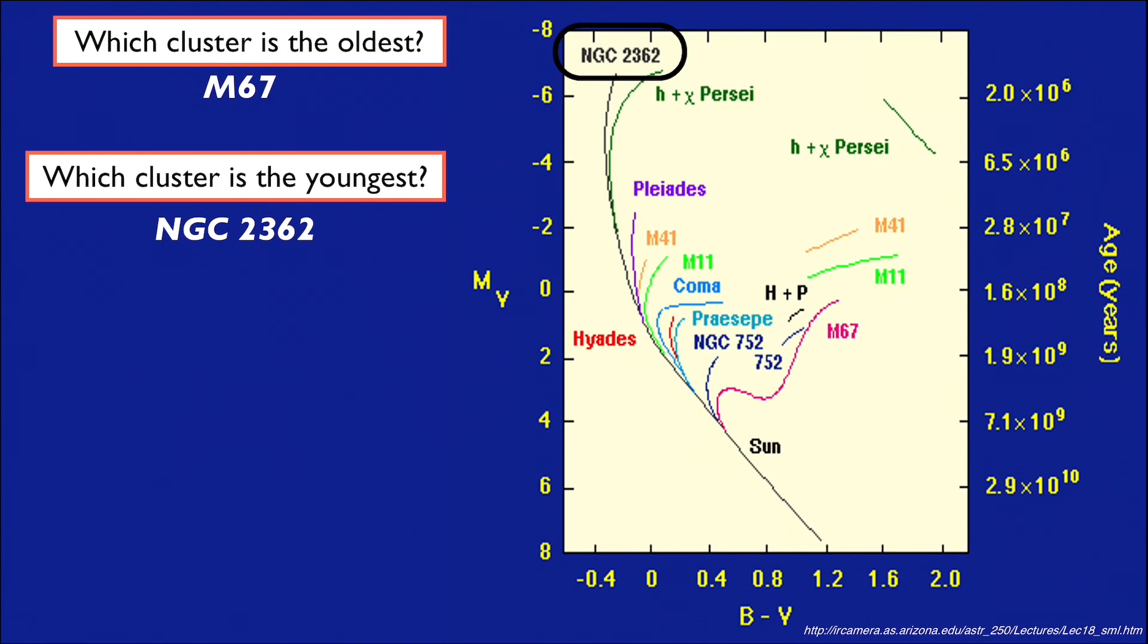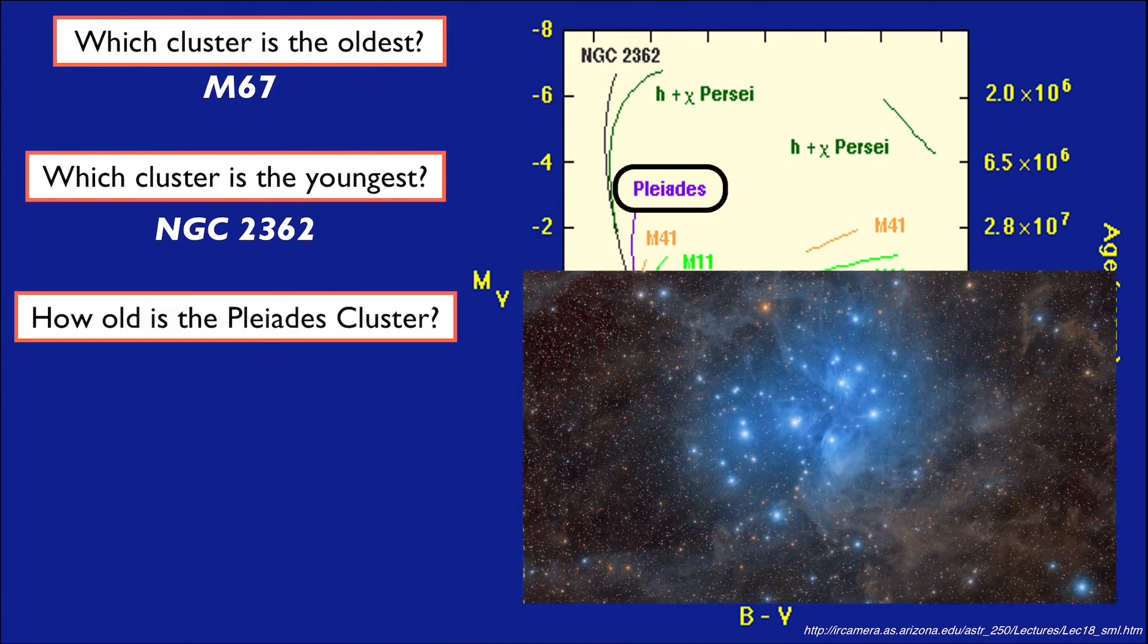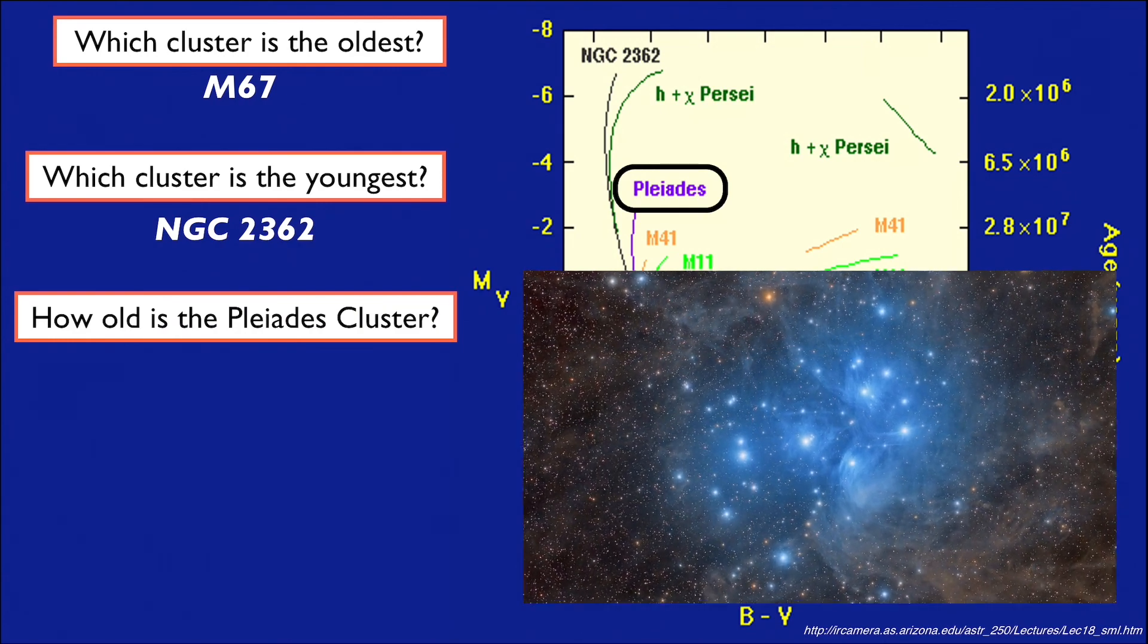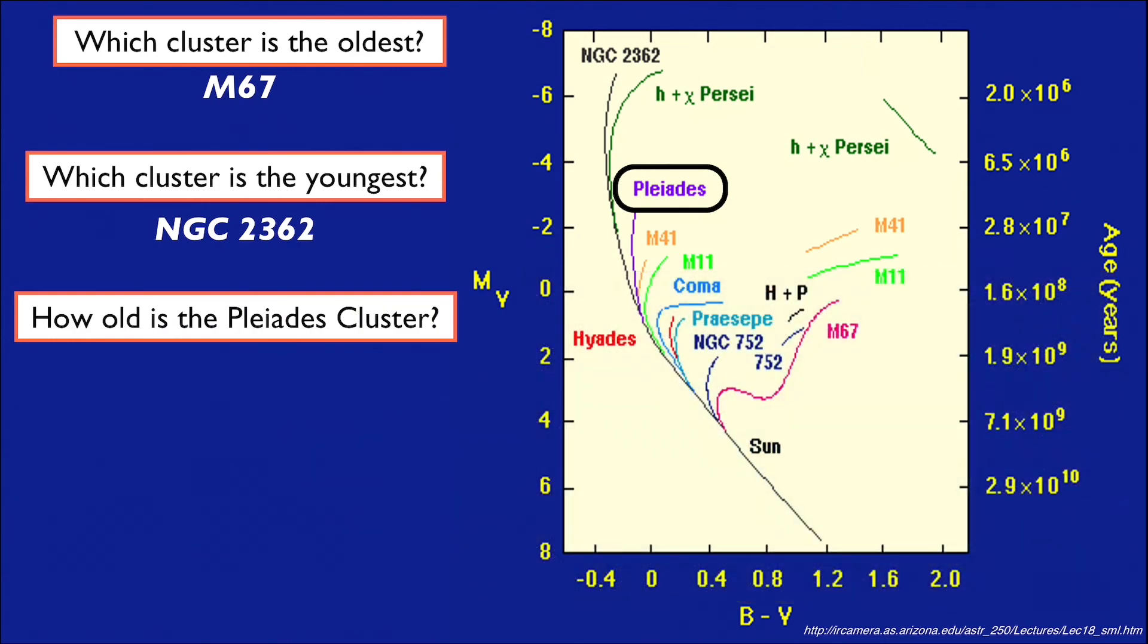Now how about determining the age of a star cluster in particular? For example, how old is the Pleiades cluster? According to this HR diagram, it would be almost 270 million years old, since its main sequence turnoff point is aligned with an age of about 270 million years.